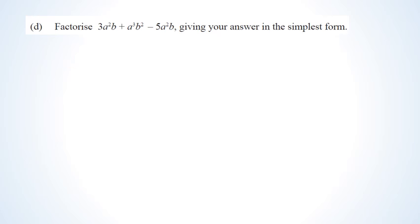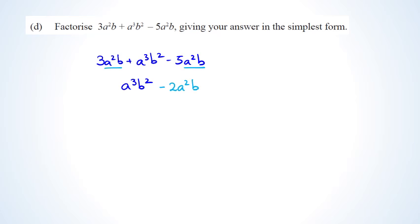In this question we've been asked to factorize this equation. The first thing you want to do is look for your like terms. I've got a squared b here and another a squared b there, so I can combine them to write a cubed b squared. Then I can write minus 2a squared b. But they're asking you to factorize, so you need to take out the common factors.